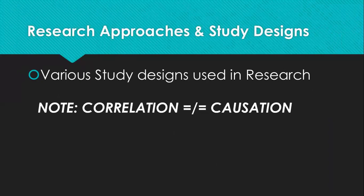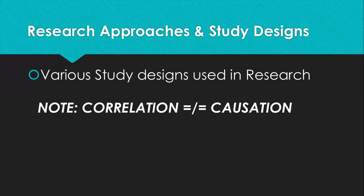We're going to look at various research approaches and study designs used in psychology. One key thing: correlation is not causation. You'll hear this throughout your career in psychology and research. Just because we see two things related — like smoking and lung cancer — if a study is correlational, all we know is there is a relationship between them. We cannot say smoking causes lung cancer, nor can we prove the reverse. Correlation can never imply causation.